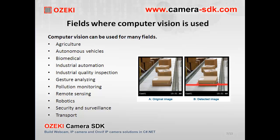Here are some of the many fields where computer vision is used: autonomous vehicles, medical fields, industrial automation, gesture analyzing, and security and surveillance. In the following, I am going to talk about what computer vision is used for in each of these fields.